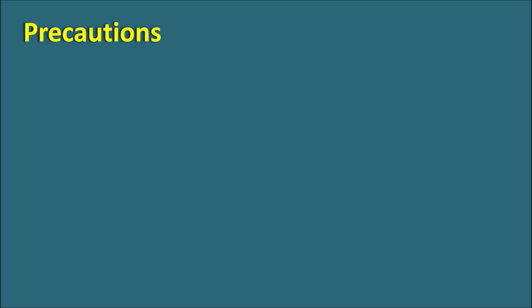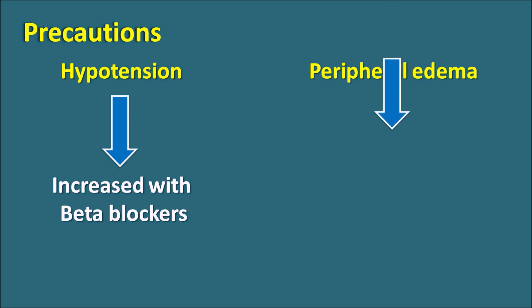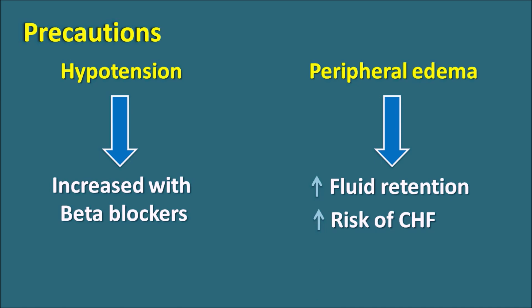What are the precautions? The main precaution is hypotension. If this drug is given with other drugs like beta blockers or alpha-1 blockers that further increase hypotension, severe hypotension may result, potentially causing sudden coma. Whenever nifedipine is given with other hypotensive agents, the dose should be adjusted and blood pressure carefully monitored. Another precaution is peripheral edema — nifedipine increases edema due to increased capillary permeability. This may worsen fluid retention and increase the risk of congestive heart failure, so conditions should be thoroughly checked.